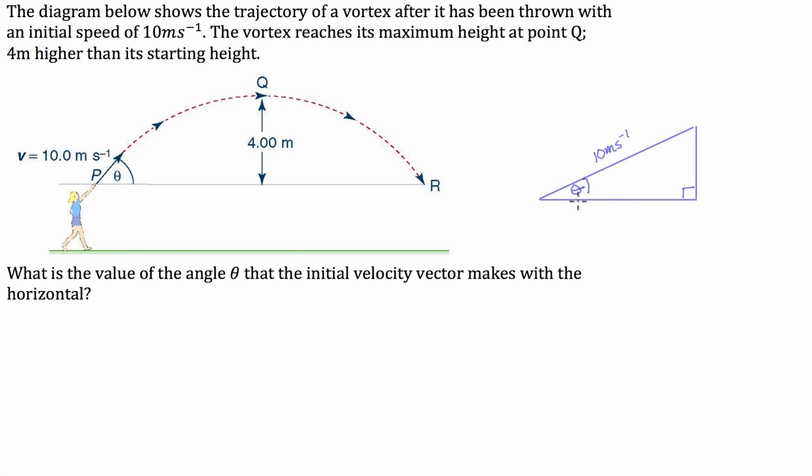What we can do is use this maximum height here to determine the velocity in the vertical direction. We can work this one out using this maximum height because with projectile motion, one of its key traits is at its maximum height, the velocity in the vertical direction, so at Q, the velocity in the vertical direction is equal to 0.